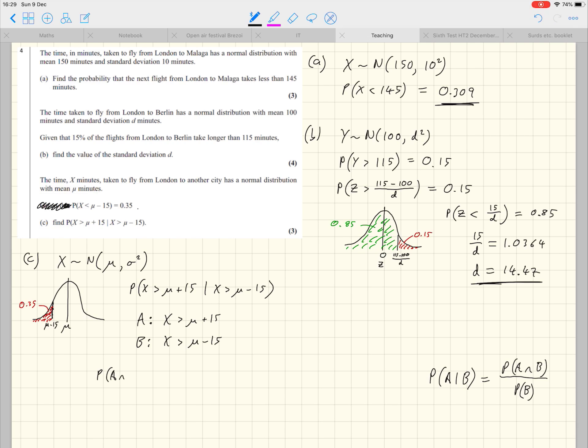To work out the answer to our problem, we need to work out the numerator and the denominator here based on this information we were given. The probability of A intersection B, that's the probability that A and B both happen. Think carefully about this. X is bigger than some value add 15 and X is bigger than that value take away 15. If I told you I'm thinking of a number that's bigger than 12 and it's bigger than 8, you don't need the information that's bigger than 8. The probability of A intersection B here is in fact just the probability that X is greater than mu plus 15.